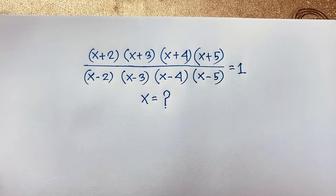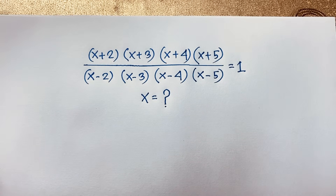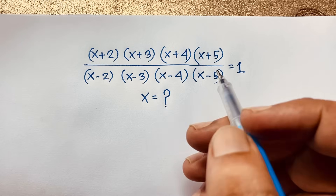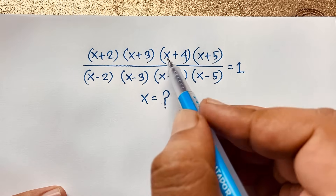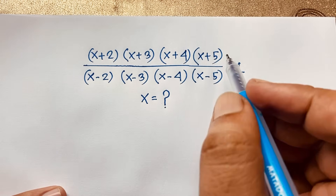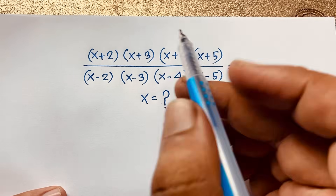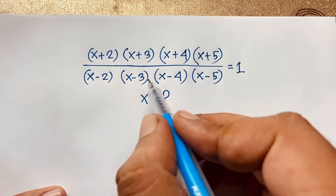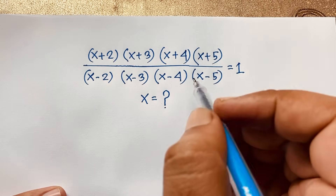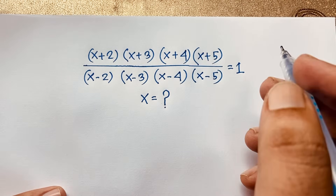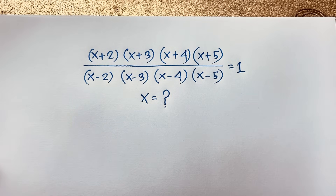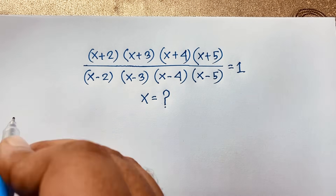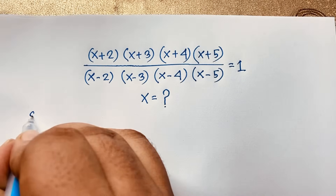Hello everyone, welcome to Russia's Classroom. Today we are solving an interesting Math Olympiad question: (x+2)(x+3)(x+4)(x+5) over (x-2)(x-3)(x-4)(x-5) equals 1. What is x? How to solve this interesting Math Olympiad question? So our math solution...